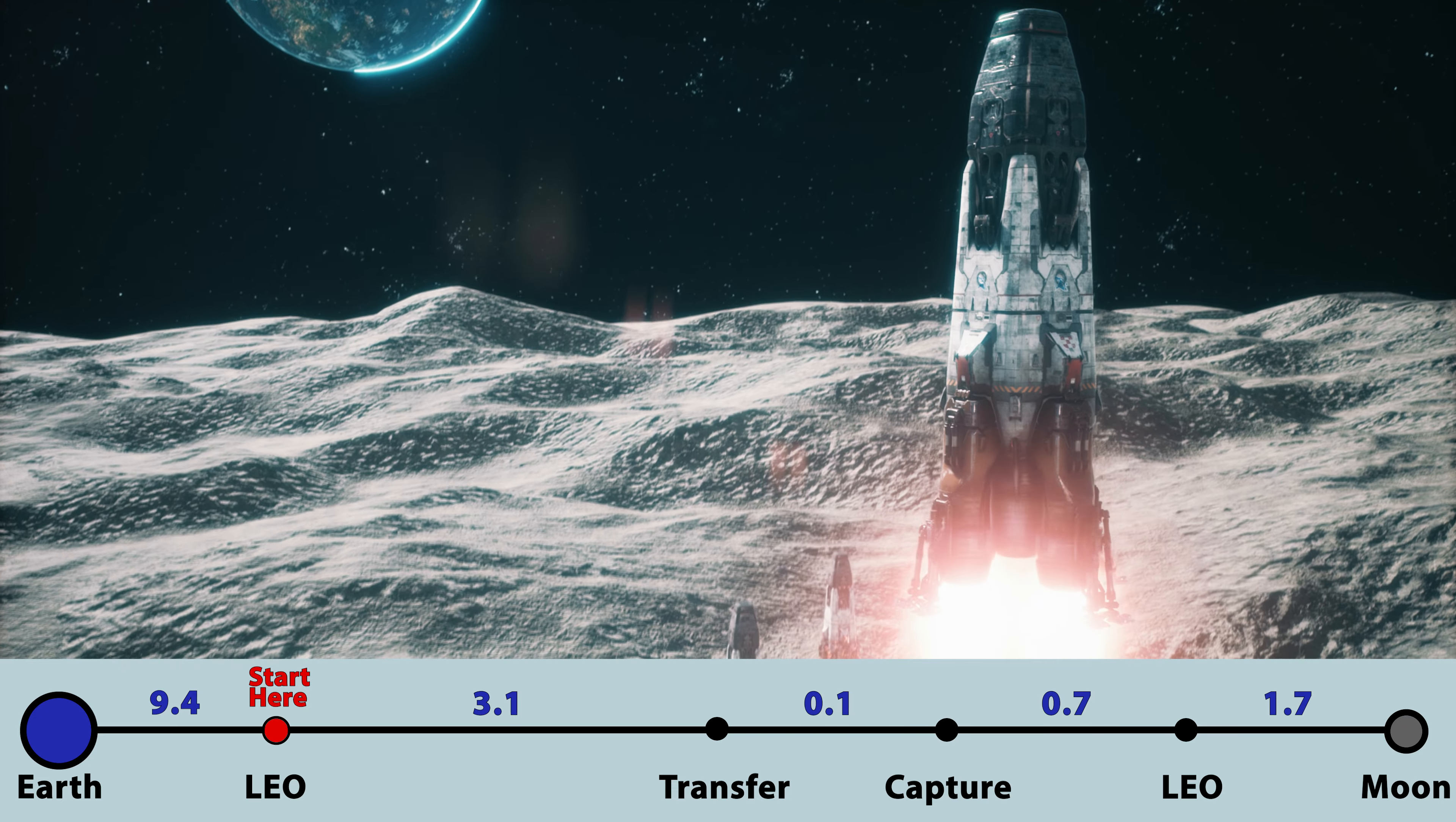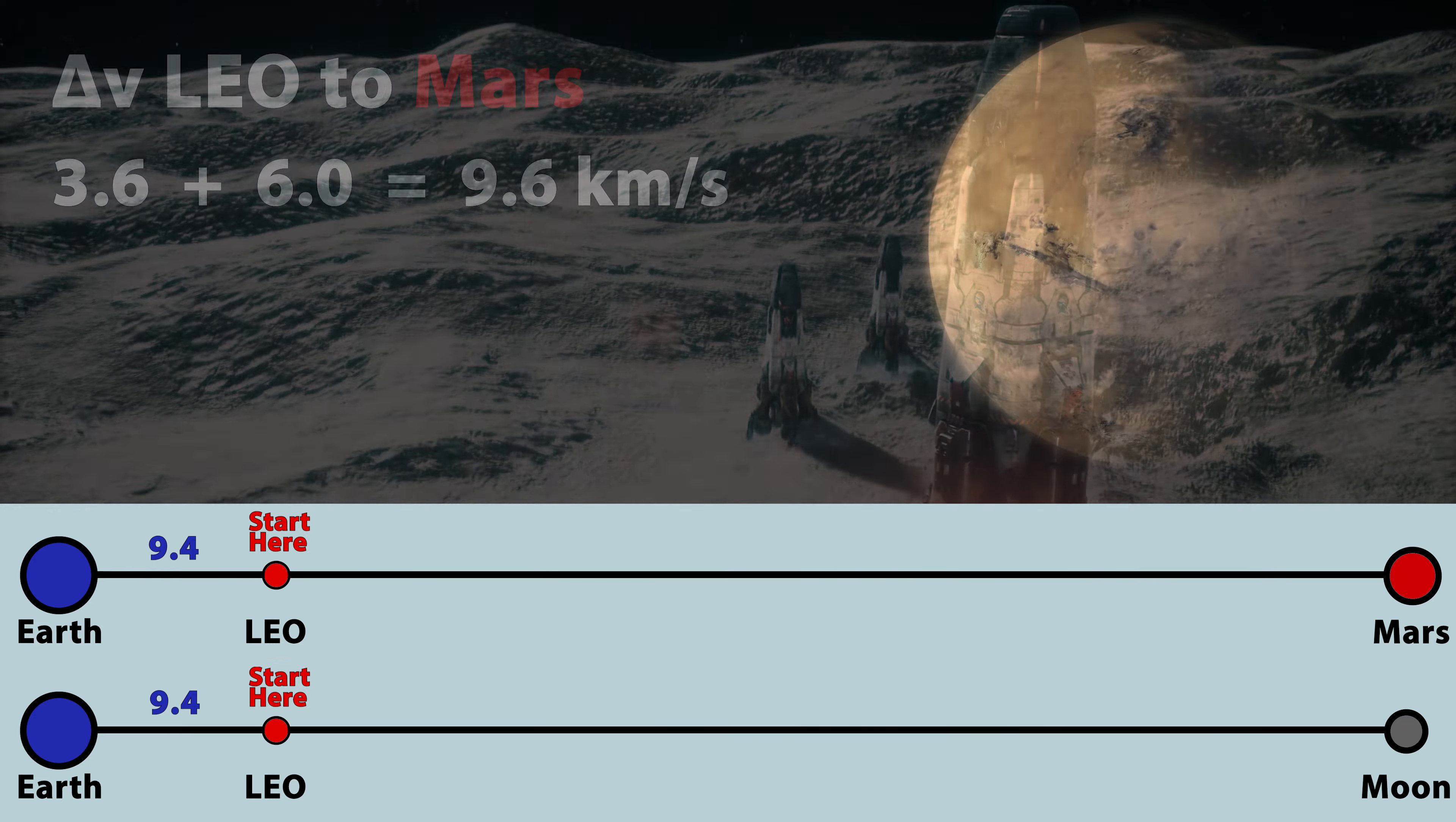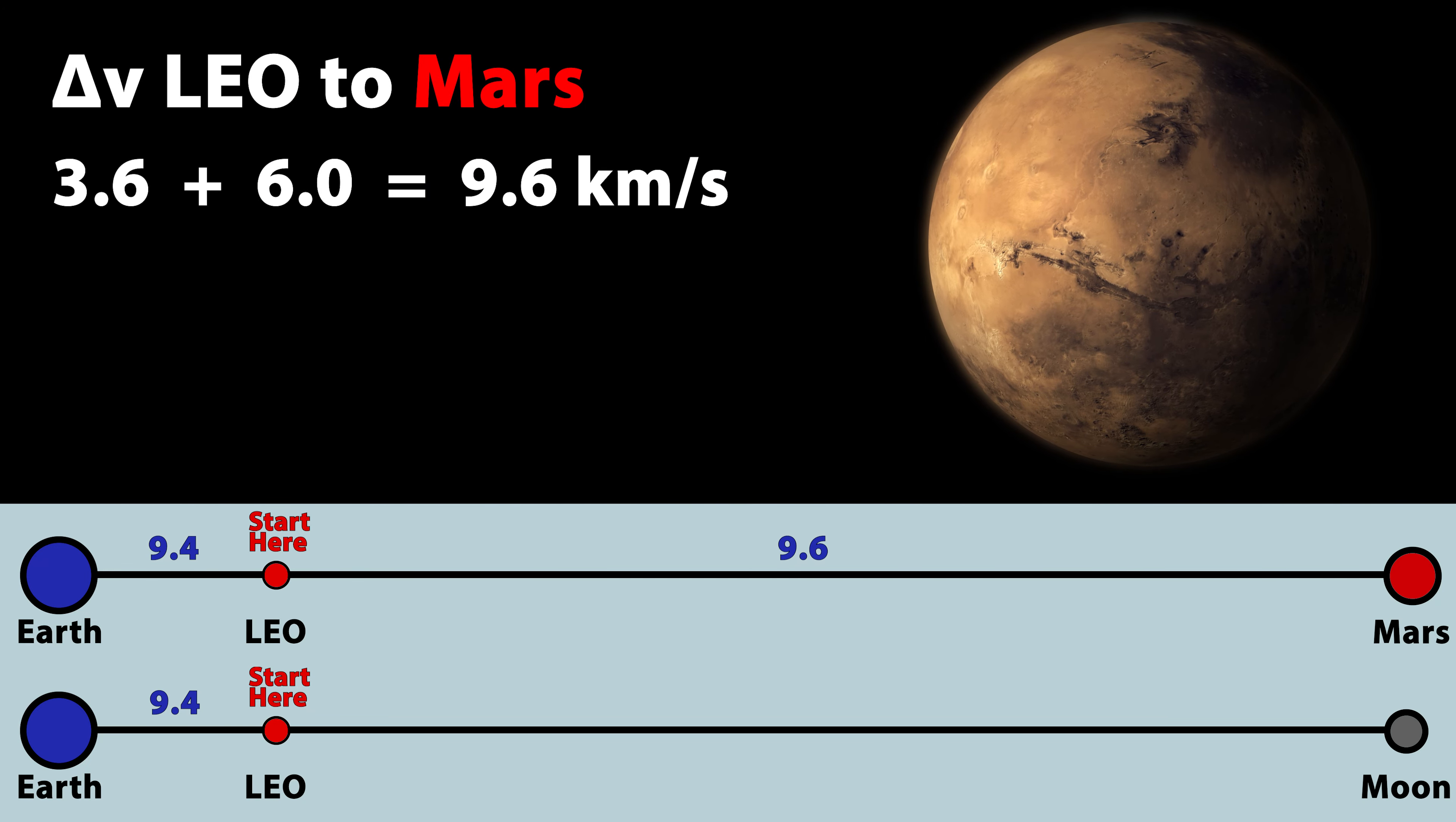To get on a trajectory toward the Moon from low Earth orbit requires a delta-v of 3.1 kilometers per second, and then another 2.5 kilometers per second to capture into orbit, lower the orbit, and land.